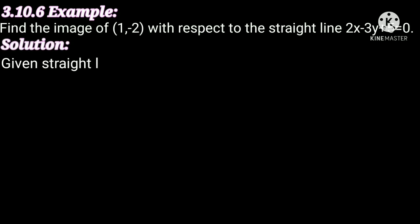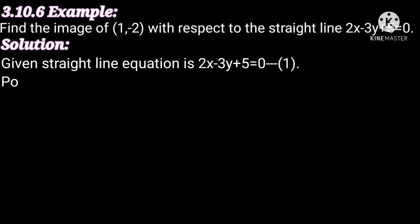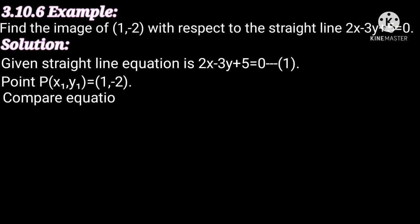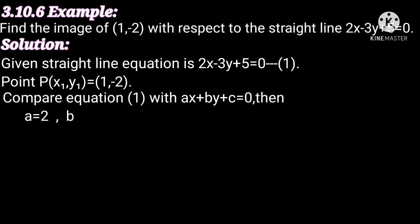Given straight line equation is 2x minus 3y plus 5 equal to 0. This is equation number 1. And point P(x₁, y₁) equal to (1, -2). Comparing equation 1 with ax plus by plus c equal to 0: a equal to 2, b equal to minus 3, and c equal to 5.